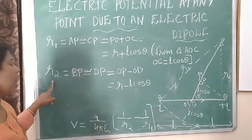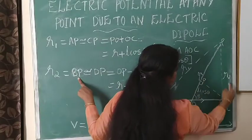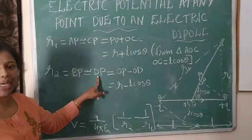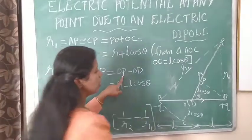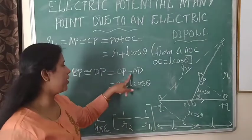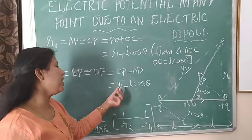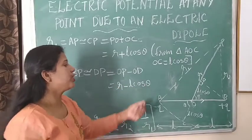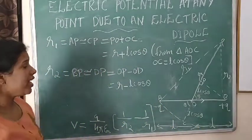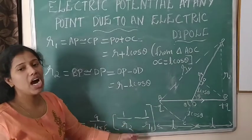Next we calculate R2. R2 means BP, and BP is approximately equal to PD. PD equals OP minus OD. Similarly, OD equals L cos theta. So R2 is approximately equal to R minus L cos theta.